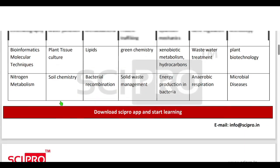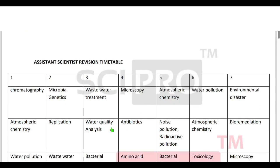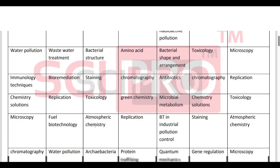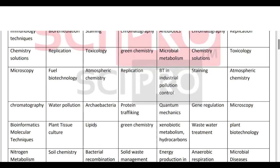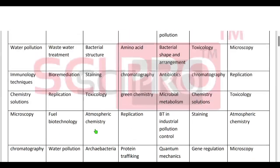Soil chemistry is important. Day 3 is wastewater treatment, water quality analysis, bacterial structure, staining, toxicology. Soil chemistry is a very important area. Toxicology, water pollution, air pollution — soil chemistry and toxicology are linked; you can learn them separately as well. Toxicology, atmospheric chemistry, archaea — examples are lipids, bacterial recombination.